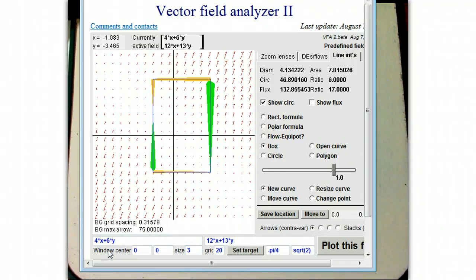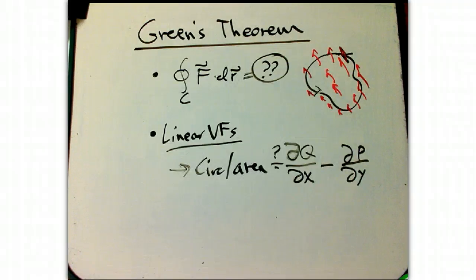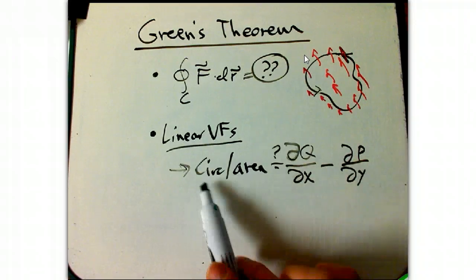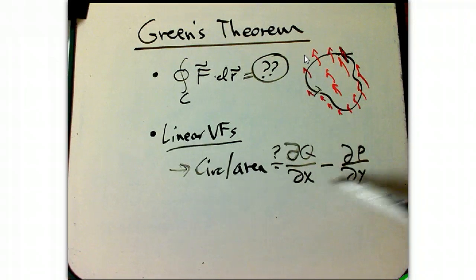This is very special because linear vector fields are exactly the things where... Oh, I'm not even showing the right thing. Here we go. Sorry, I was forgetting to click. So the circulation per area is dq/dx minus dp/dy. That's the guess we have. This is exactly the kind of thing that is constant when the vector field components are just linear. And so we have to figure out how to get beyond that.